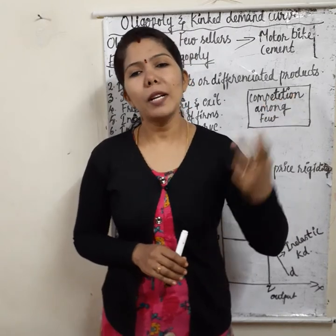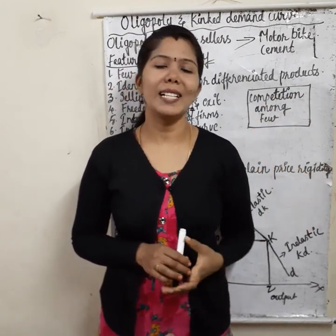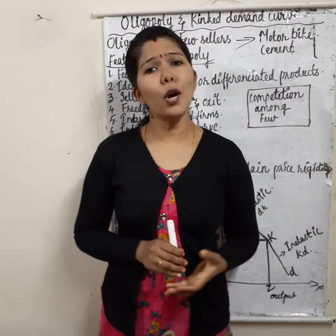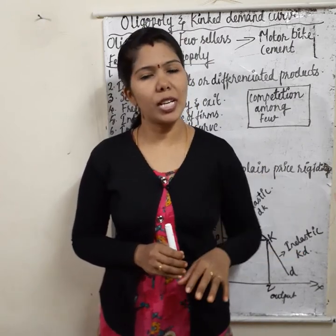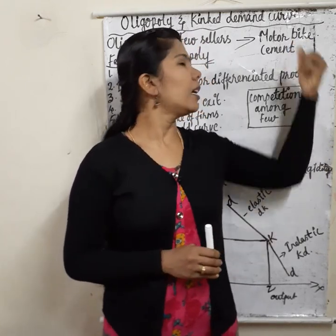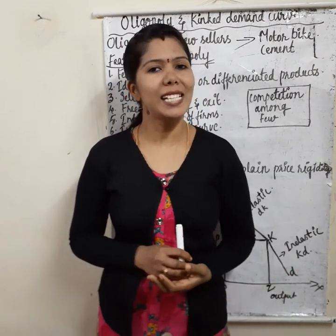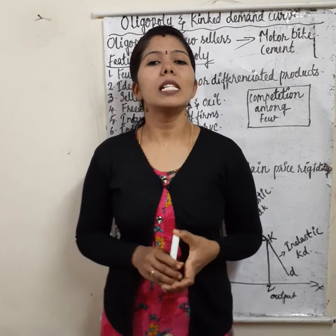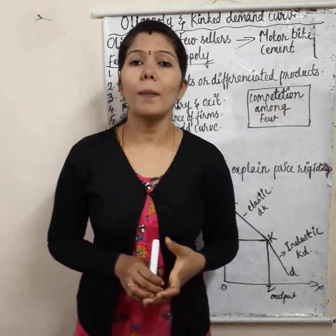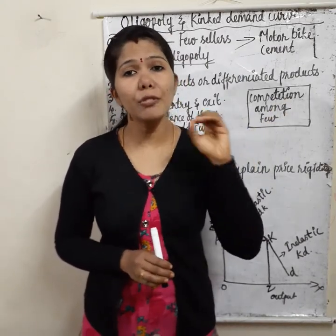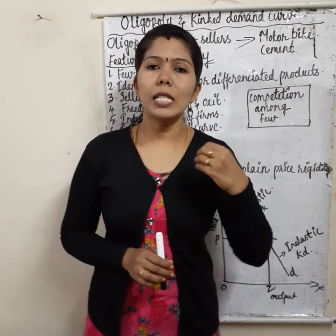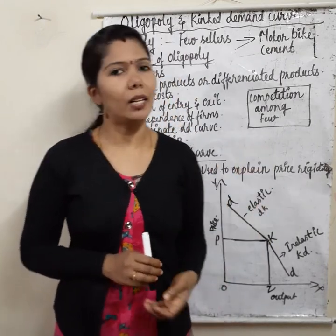Examples of differentiated products include Suzuki, Bajaj, TVS, Hero, and so on. So under oligopoly, products will be either identical — for example, cement — or differentiated — for example, motorbikes. In short, oligopoly is competition among few sellers. The number of sellers will be below 10.